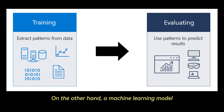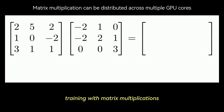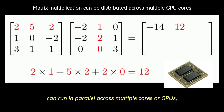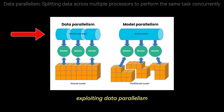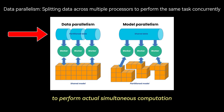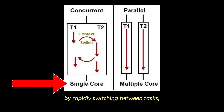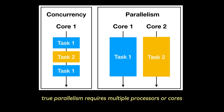On the other hand, a machine learning model training with matrix multiplications can run in parallel across multiple cores or GPUs, exploiting data parallelism to perform actual simultaneous computation. The TLDR is this: while concurrency can be achieved on a single CPU by rapidly switching between tasks, true parallelism requires multiple processors or cores.